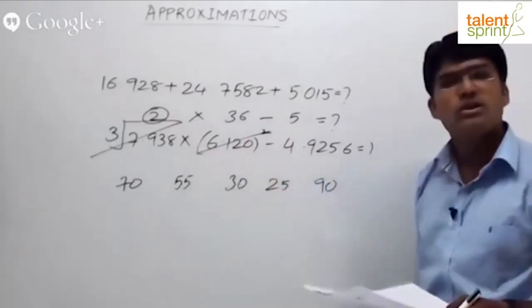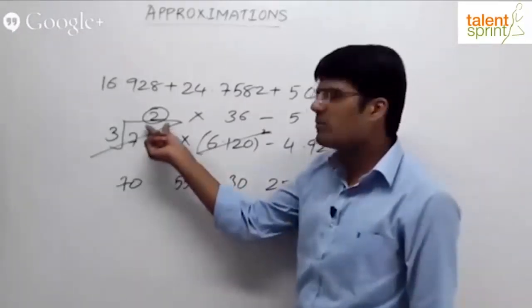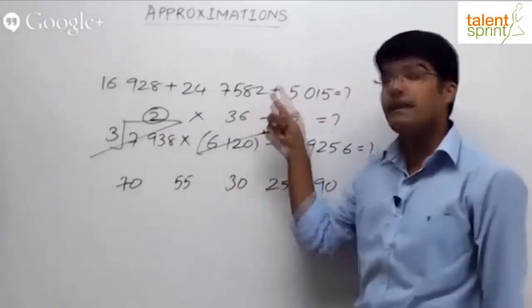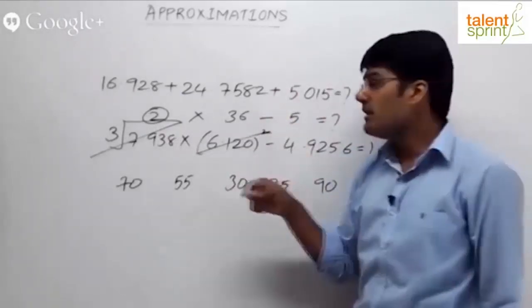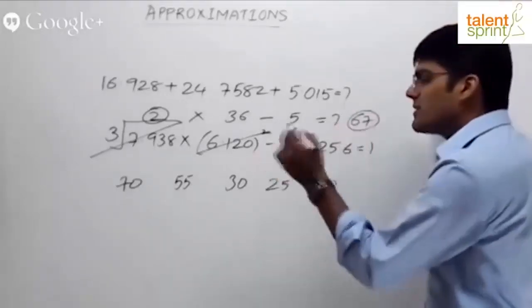Are we close to 67 here? Which option? The first option, 70, can be taken as the required answer. Yes, because 7.938 will be very close to 2, slightly less than 2, but 6.12 squared will be more than 36. That you need to keep in mind.